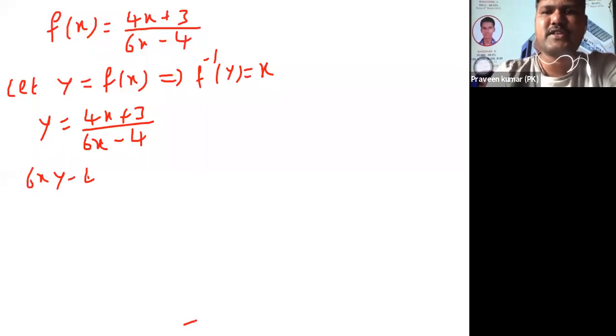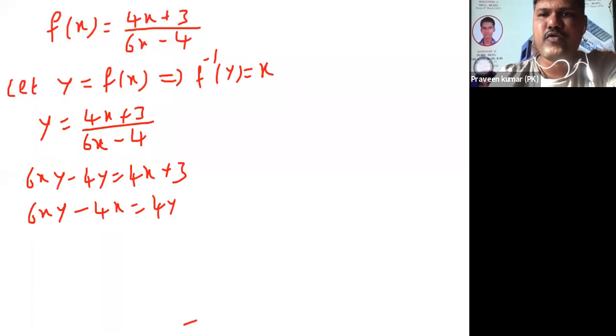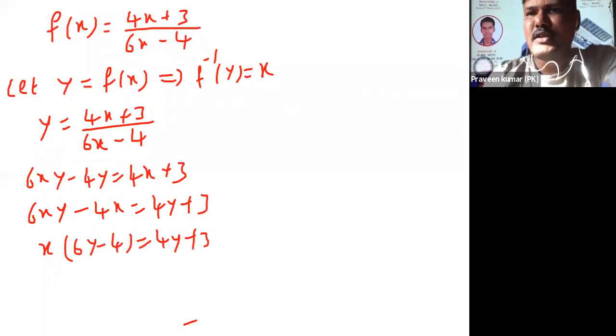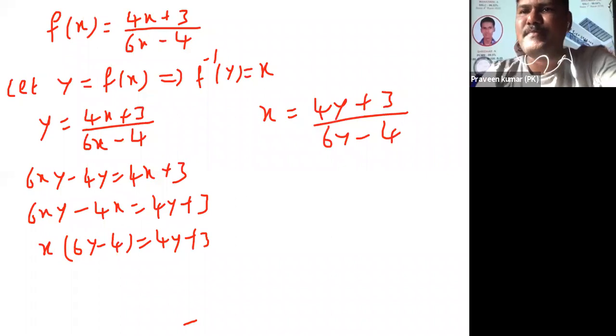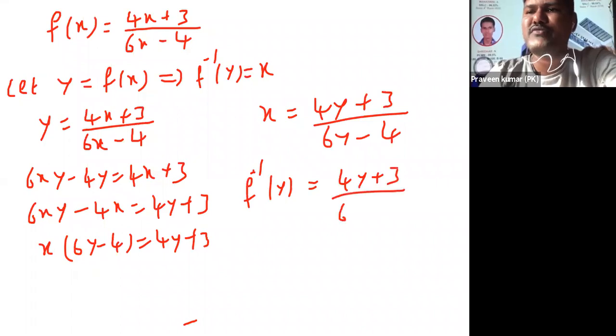6xy minus 4y is equal to 4x plus 3. Interchange the terms: 6xy minus 4x is equal to 4y plus 3. Take x as common: 6y minus 4 is equal to 4y plus 3. Then what is x? 4y plus 3 by 6y minus 4. What is meant by x? f inverse of y is equal to 4y plus 3 by 6y minus 4.